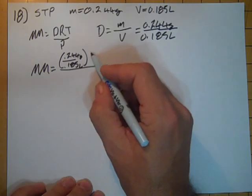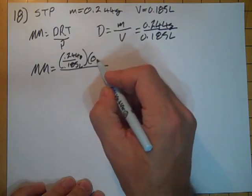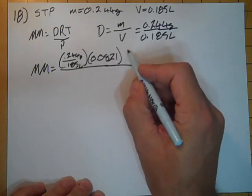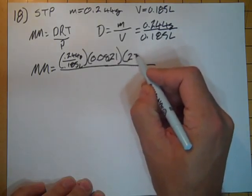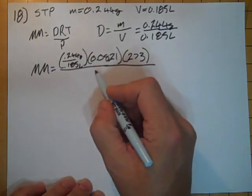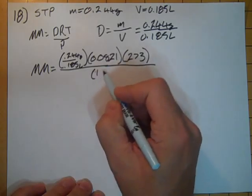Then R, 0.0821. Then the temperature, which is 273, that's the standard temperature, and then the pressure, which is one atmosphere.